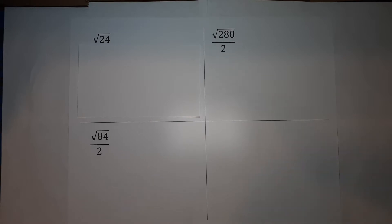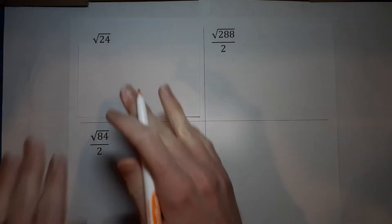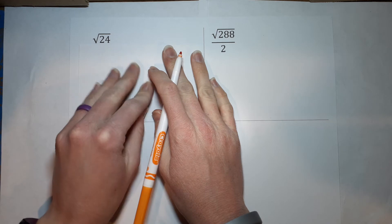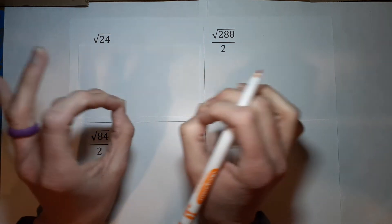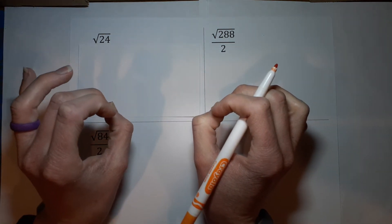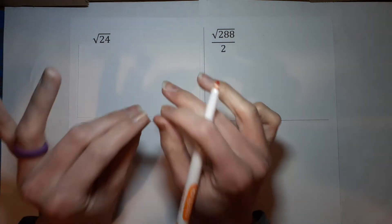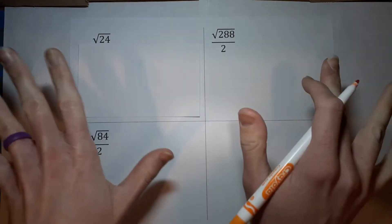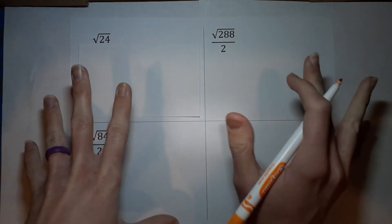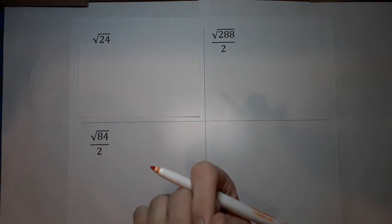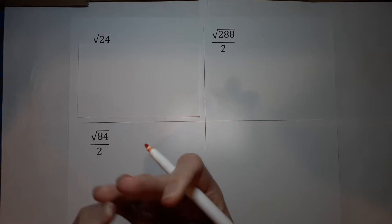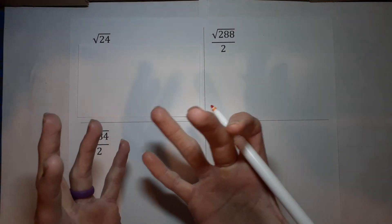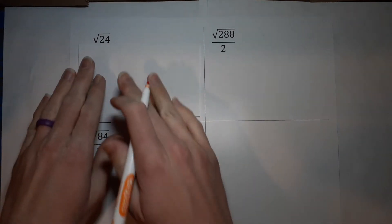Not all numbers have a pretty square root number. If you put it in your calculator, you'll get an ugly decimal. So a lot of times we just simplify them as far as we can. How do we do this?